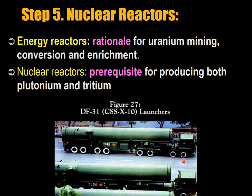Nuclear reactors — energy reactors — can serve as a rationale for uranium mining, conversion, and enrichment. Nuclear reactors are the prerequisite for producing both plutonium and tritium. Also shown are Chinese DF-31 intercontinental ballistic missiles on mobile launchers — these are designed to be able to hit the United States. In 1993 there were 109 power reactors in the US generating about 20% of the electricity, and the situation is still roughly the same after more than a quarter century, with about 400 in the world total.